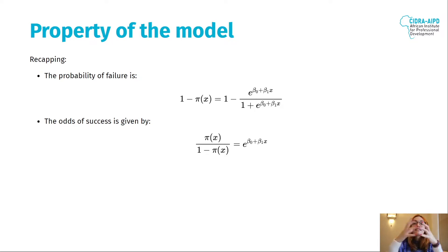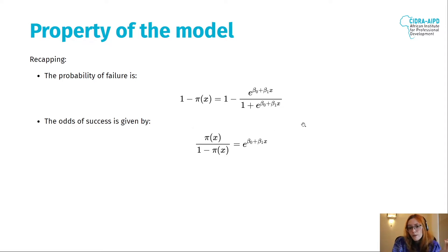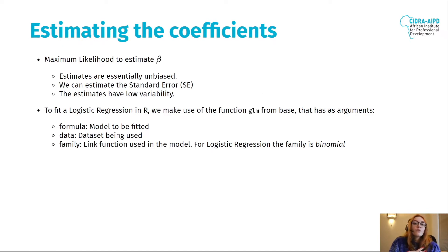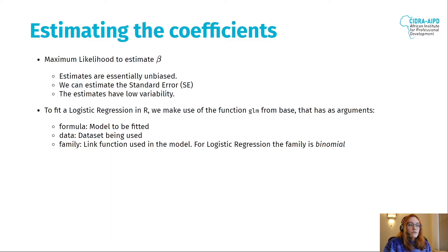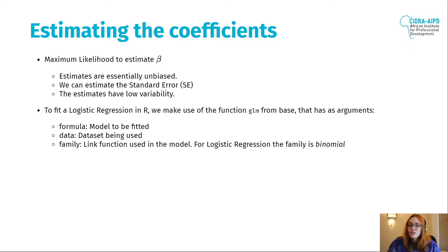To estimate who beta zero and beta one are, we have two ways. We can use maximum likelihood to estimate beta, and the good thing is that it's going to be unbiased. We can also estimate the standard errors, and those estimates will have very low variability, which is good. Now, how do I actually fit a logistic regression in R? For that, we're going to use the glm function.